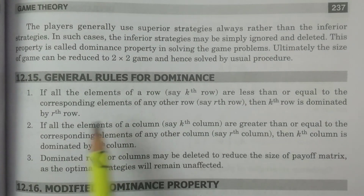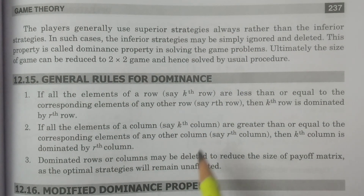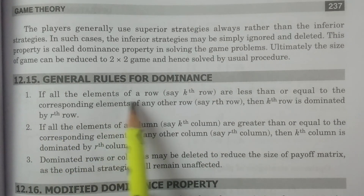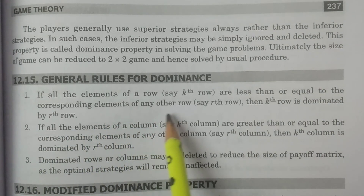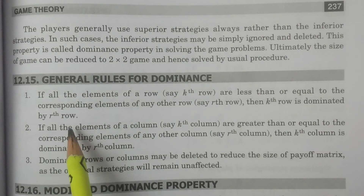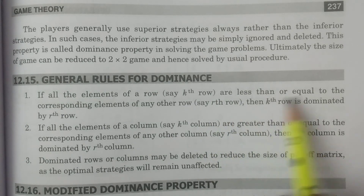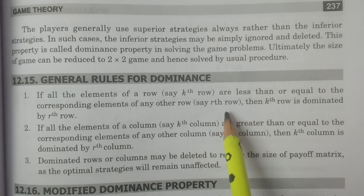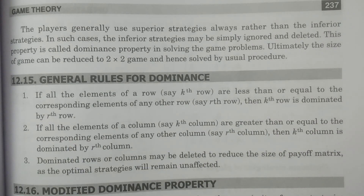These are the general rules for dominance. Rule one: if all the elements of a row, say the kth row, are less than or equal to the corresponding elements of any other row, say the rth row, then the kth row is dominated by the rth row.